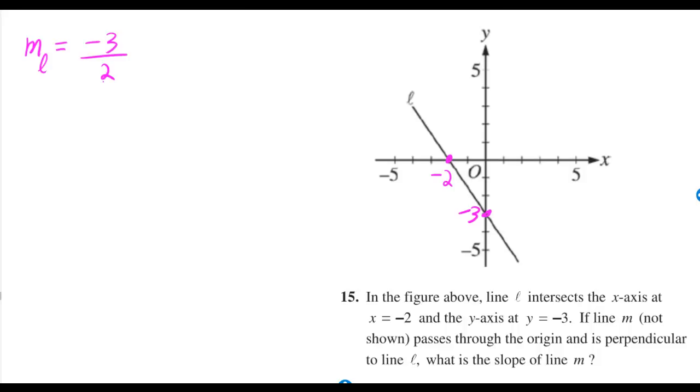We can figure out the slope of line L by realizing we're going to the right by 2. That means you use positive when you're doing rise over run, and we're going down by 3. That means you use negative 3.